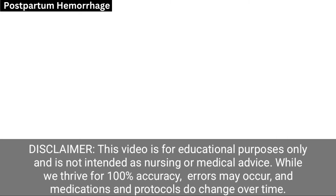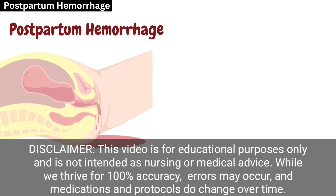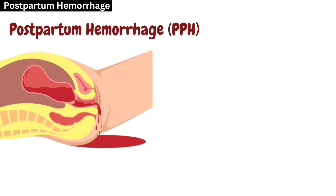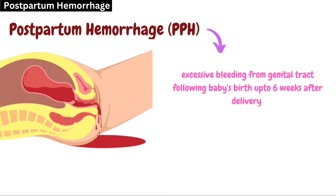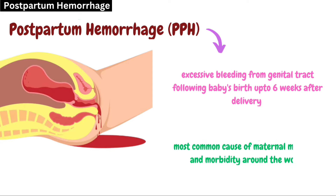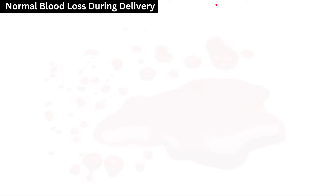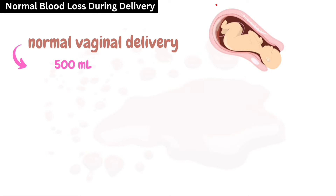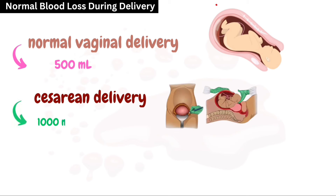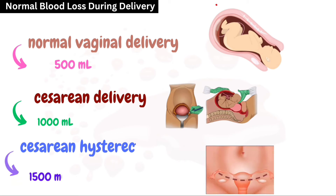In this video we will talk about postpartum hemorrhage, or PPH. PPH is the excessive bleeding from the genital tract following the baby's birth, up to six weeks after delivery. It is the most common cause of maternal mortality and morbidity around the world. Normally, the amount of blood loss in vaginal delivery is 500 ml, in cesarean delivery it is 1000 ml, and it is 1500 ml in cesarean hysterectomy.